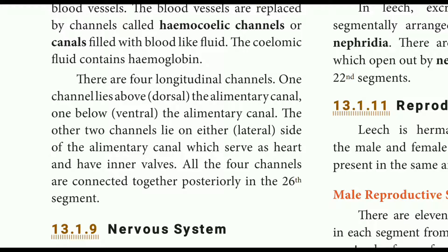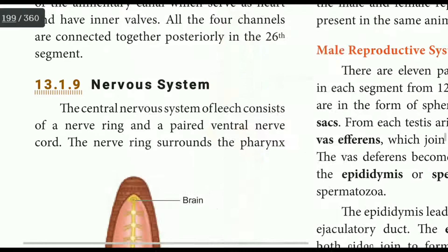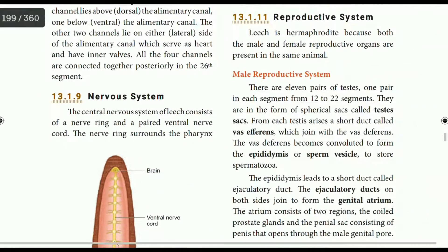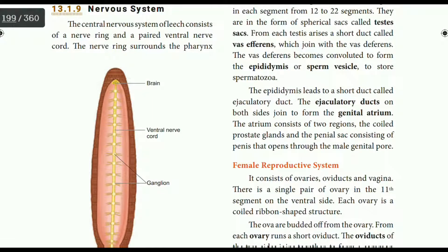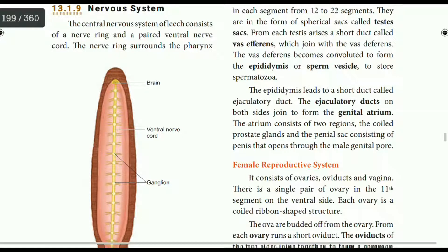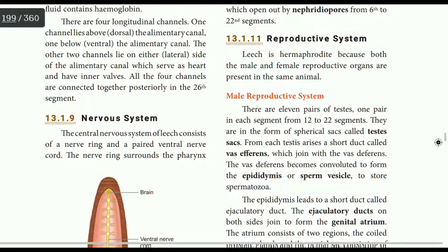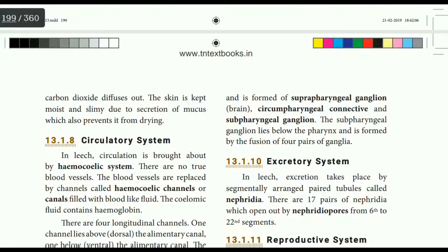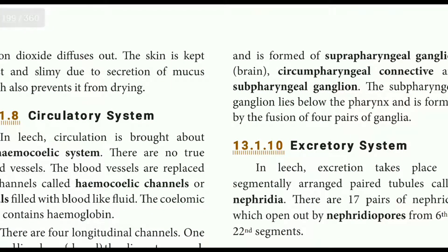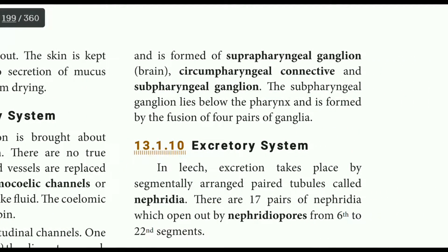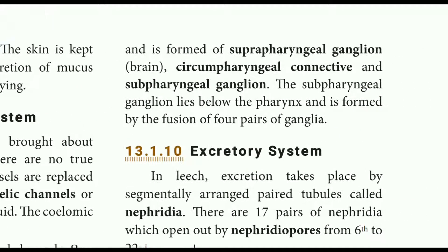Nervous system: there is a nerve ring and a paired ventral nerve cord. The nerve ring surrounds the pharynx and is formed by the suprapharyngeal ganglion, which acts as the brain, along with the circumpharyngeal and subpharyngeal ganglia. The subpharyngeal ganglia are formed by the fusion of 4 pairs of ganglia.